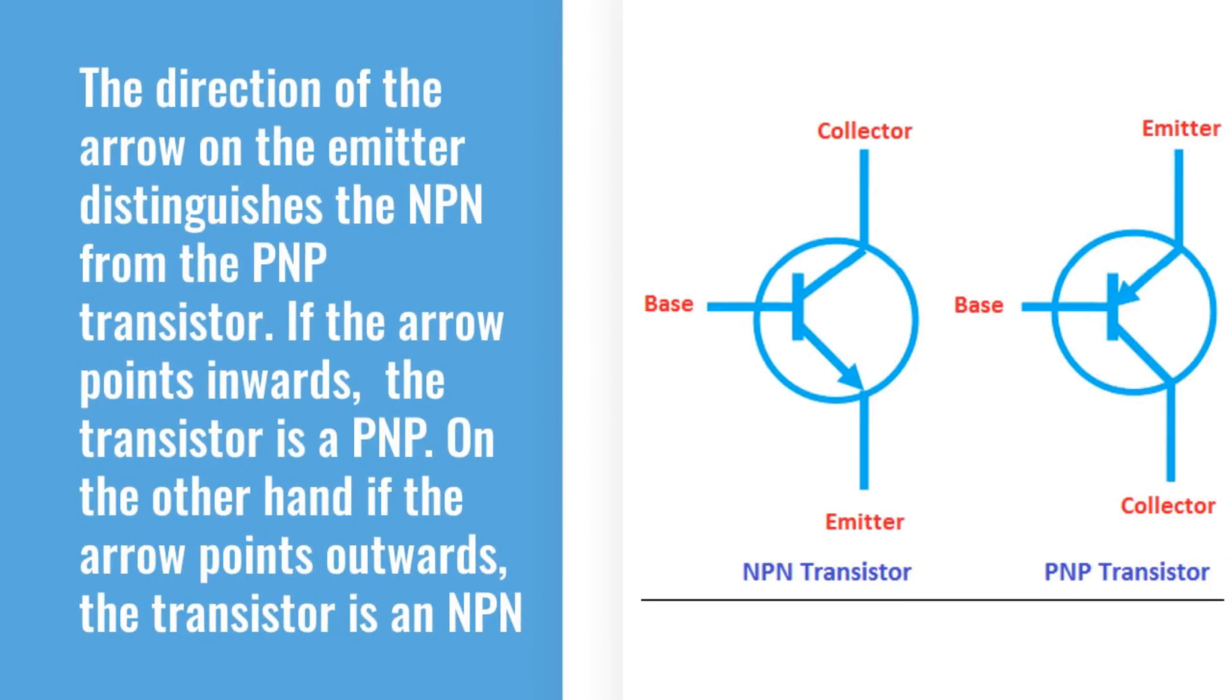If the arrow points inwards, the transistor is a PNP. On the other hand, if the arrow points outwards, the transistor is an NPN.